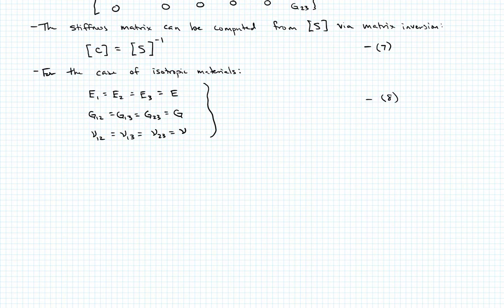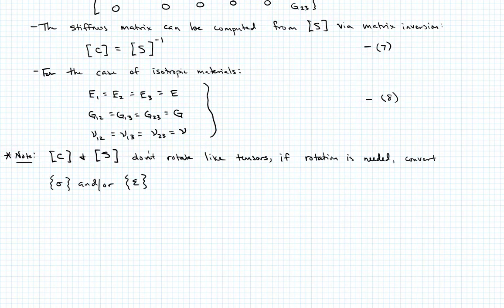The last thing I want to point out is that the compliance matrix and the stiffness matrix don't rotate like tensors. So if you need to rotate, it needs to be done by converting the stress and strain vector. You convert those into tensor form. You rotate appropriately. And then you have to convert back to vector form. So I understand that we didn't derive a lot of this stuff, and I think most of you have seen this before. But I wanted it to be in your notes for this class for when we talk about anisotropic properties, you know how to handle them. And you have the tools that you need to do the computations that are going to come up.